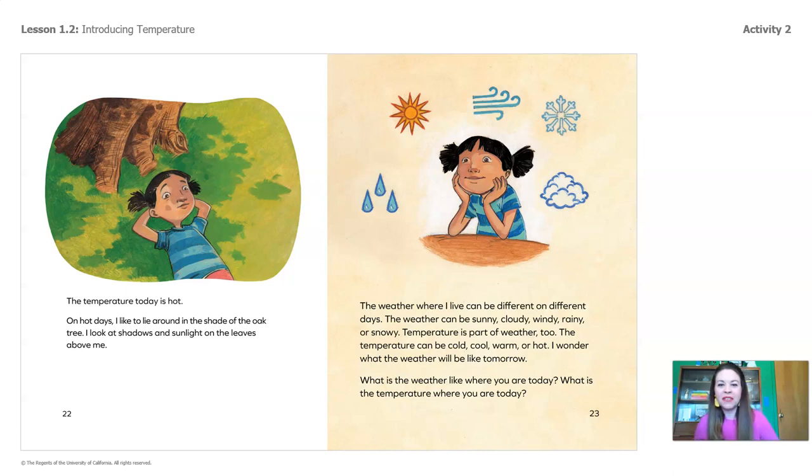The weather where I live can be different on different days. The weather can be sunny, cloudy, windy, rainy, or snowy. Temperature is part of weather, too. The temperature can be cold, cool, warm, or hot. I wonder what the weather will be like tomorrow. What is the weather like where you are today? What is the temperature like where you are today?